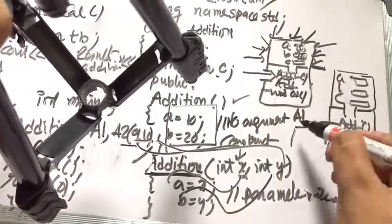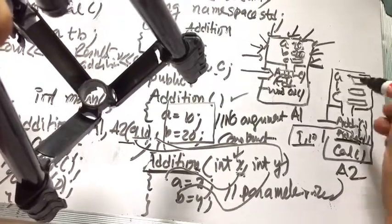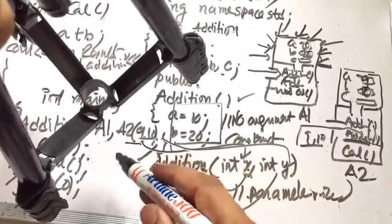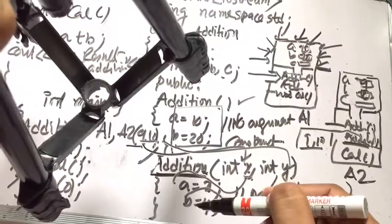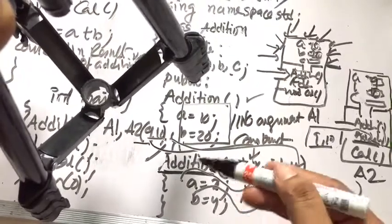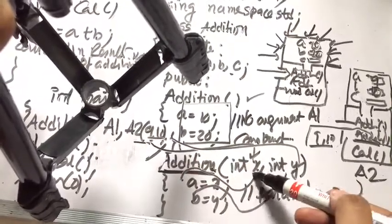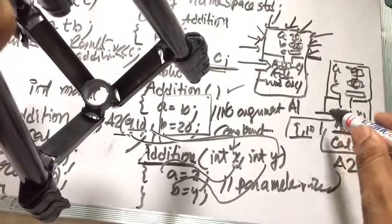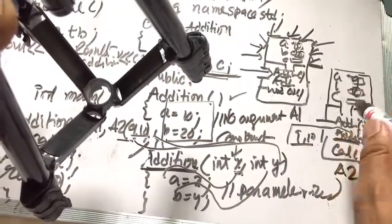From main, 9 and 10 are transferred to the addition constructor, which initializes a to 9 and b to 10. This is the parameterized constructor — just like loading a photo from hard disk to upload to a website, the constructor takes parameters and loads values into data members.